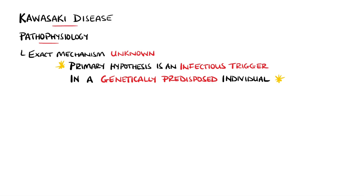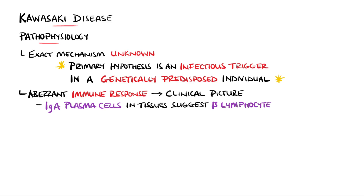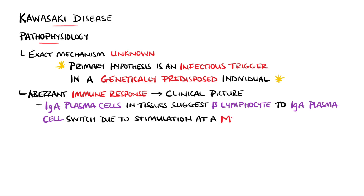Kawasaki disease is a systemic vasculitis. Therefore, it is thought that the infection moves from the bloodstream to the tissues, where an aberrant immune response in these sites generates the clinical picture. A strange finding in the immune response is IgA plasma cells within the affected tissues. This suggests that there is a switch from B lymphocytes to IgA plasma cells due to stimulation at a mucosal site by an intracellular pathogen, such as a virus.